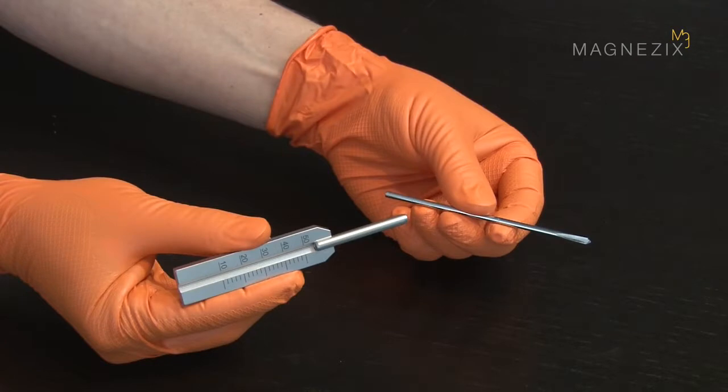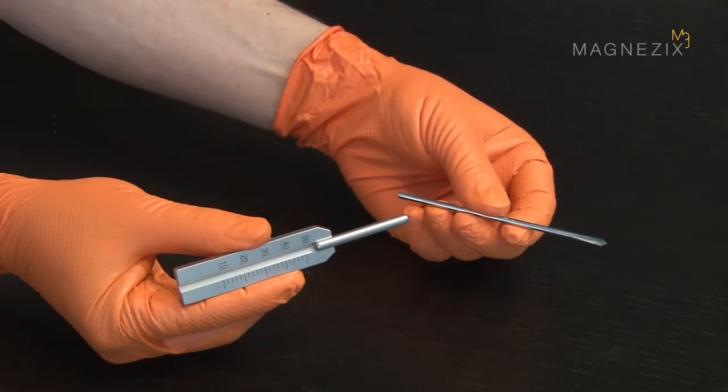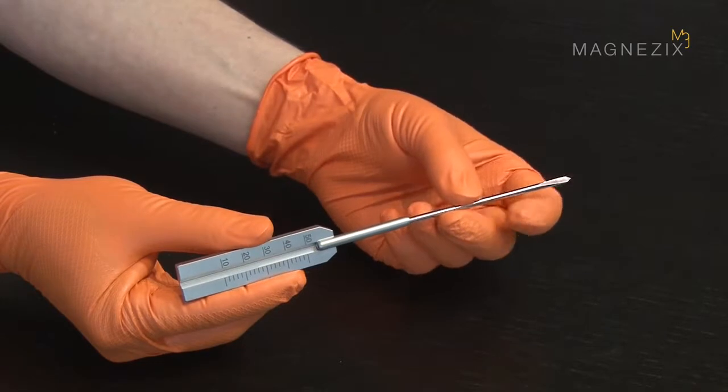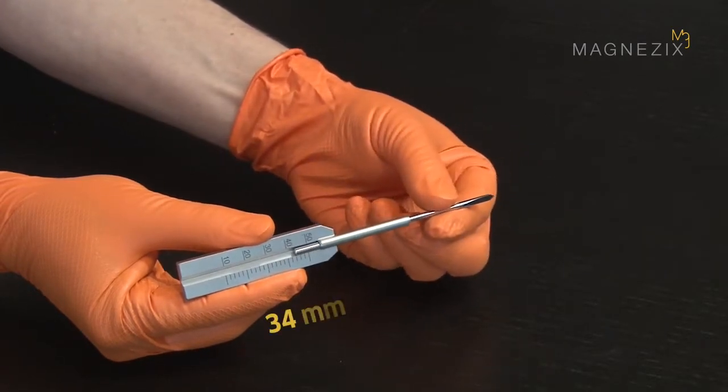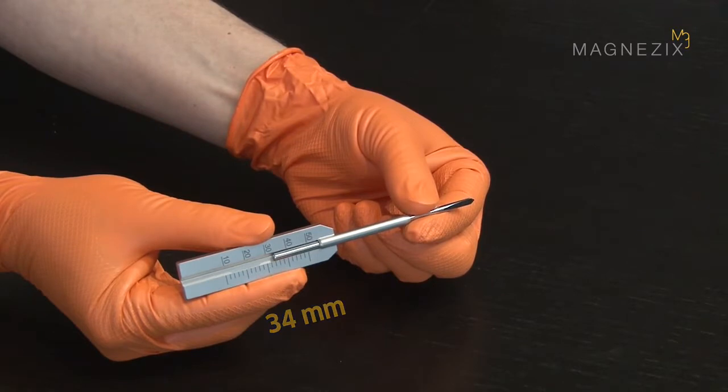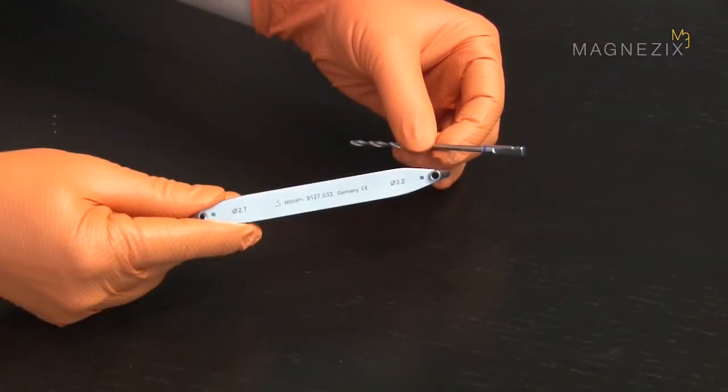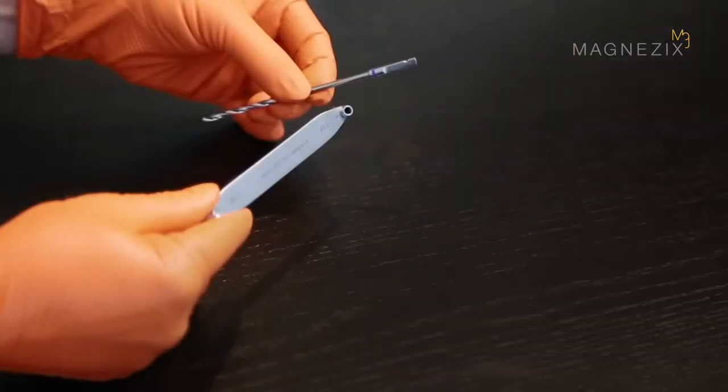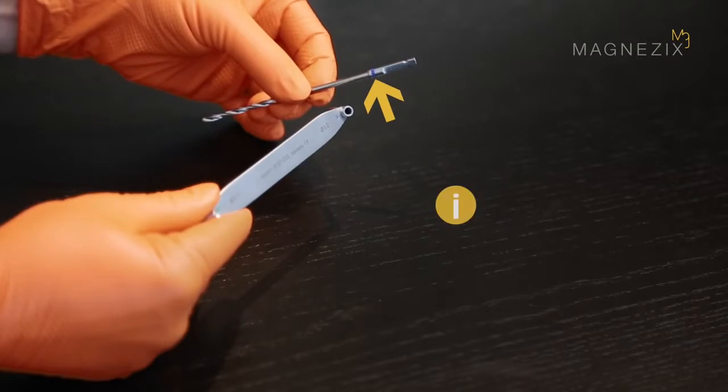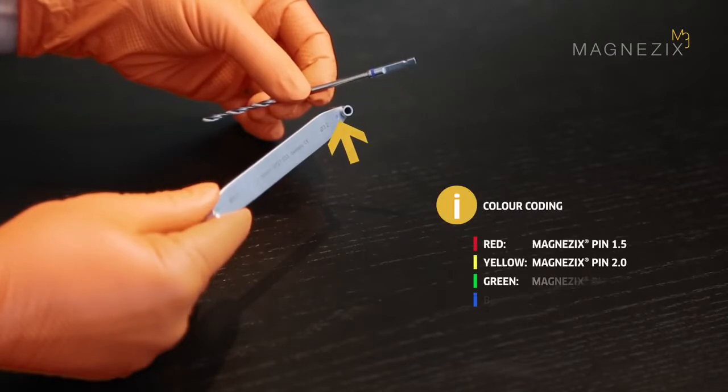If the reduction wire has been used for temporarily stabilizing the fracture situation, the length of the pin can be determined by advancing the measuring device over the reduction wire up to the bone. All instruments compatible with the different dimensions are color coded to ensure the correct instrument is used for each pin dimension.